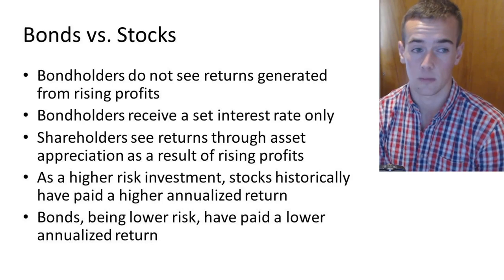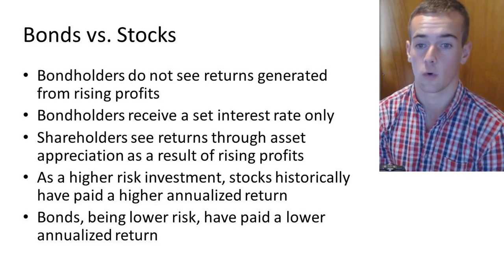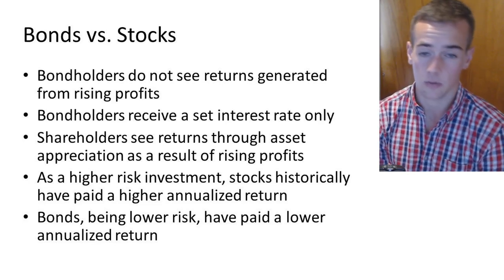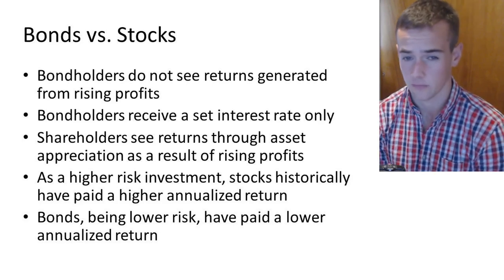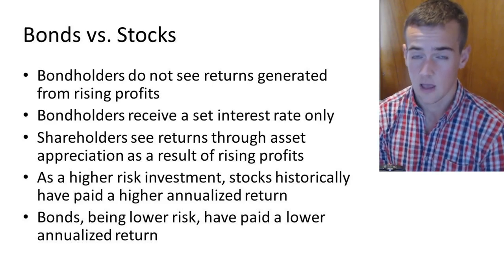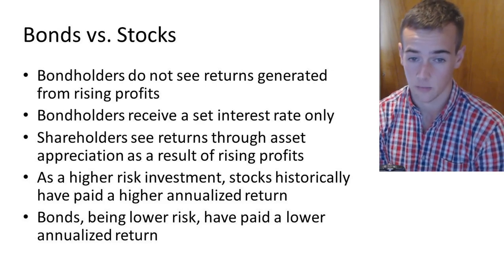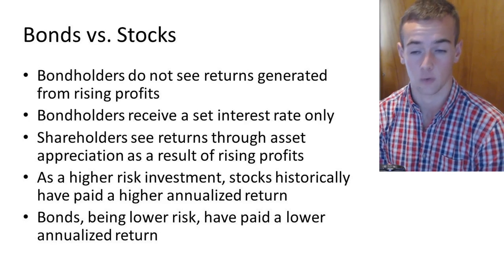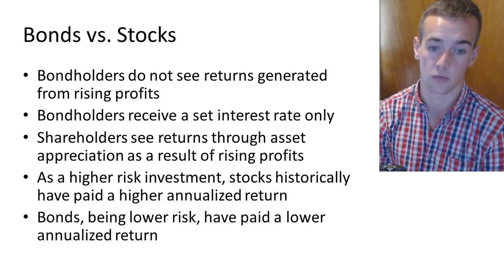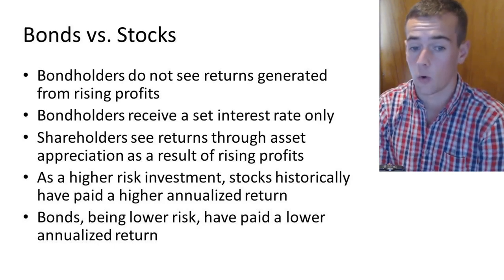Let's cover the difference between bonds versus stocks. Bondholders do not see returns generated from rising profits — they receive only a set interest rate that typically does not change. Many people like bonds because they have, in some cases, been a safer investment. But shareholders will see returns through asset appreciation as a result of rising profits. So if a corporation issues a bond and uses that money to expand the business and sees rising profits, bondholders won't see any of that — they just get the predetermined interest rate. Shareholders, because they are part owners, will see that asset appreciation.